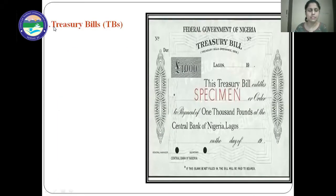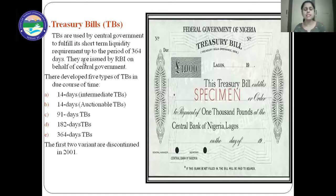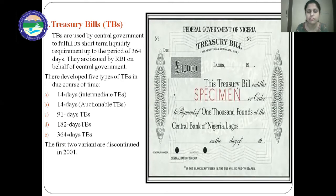The first instrument is the treasury bill. Treasury bills are issued by RBI on behalf of the central government to fulfill its short-term cash or liquidity requirements. There are five types of treasury bills: 14-day intermediate treasury bill, 14-day optionable treasury bills, 91-day treasury bill, 182-day treasury bills, and 364-day treasury bills.